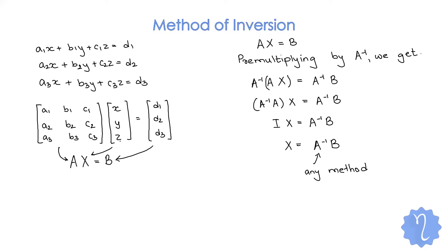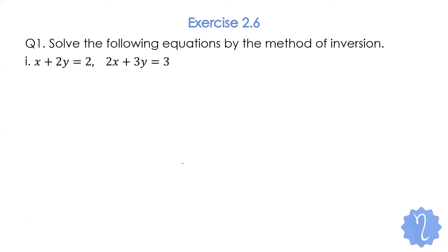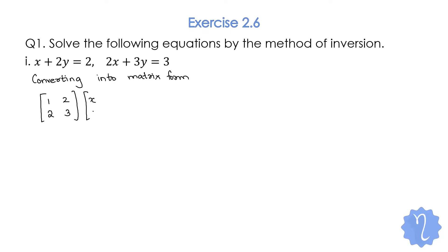We can always check by substituting the values back in. Now let's start question number 1 of exercise 2.6. In the first question, we have x + 2y = 2 and 2x + 3y = 3. We have two variables and two equations. The first step is converting into matrix form. We get the matrix [1, 2 / 2, 3] into [x, y] = [2, 3].